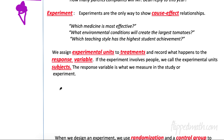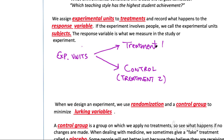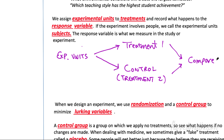Generally an experiment works like this — you can pause the video if you need to write this down. We take our experimental units and divide them into two treatments: treatment one and treatment two. Treatment two in this example is our control — where we apply no change. If we're administering a drug, treatment one gets the drug, and the people in treatment two get something that looks like a drug. After applying the two treatments, we compare the results — we compare the response variables.